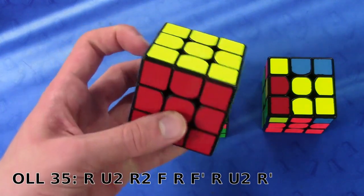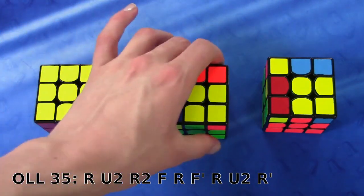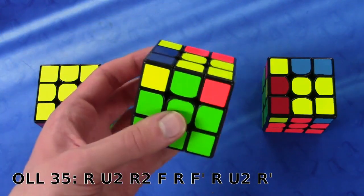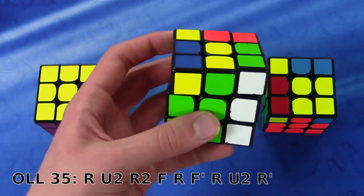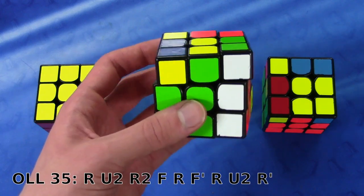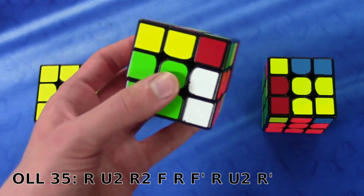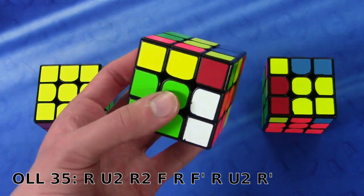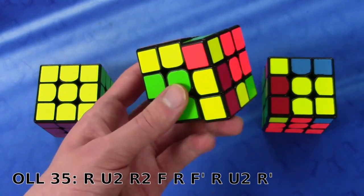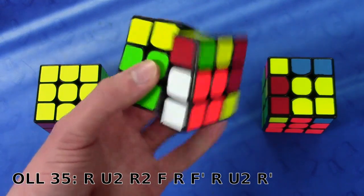There's not really anything better than it, but it is quite fast nonetheless. So the finger trick is pretty standard. First R, like this. Now U2 - you can do a double flick, but I prefer just to do two single flicks. Now R2, once again, I really don't think that an R2 flick would be good, so I'm just gonna do two single flicks.